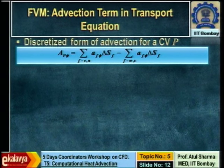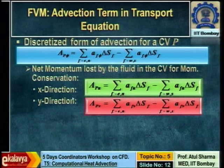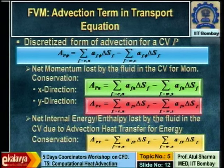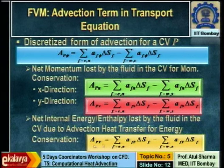When you do the advection balance, it represents net momentum lost by the fluid in the control volume for the momentum equation, and net internal energy lost by the fluid in the control volume due to advection for heat transfer. This is out minus in, which is why it is called a loss. Analogously, in conduction the sign convention was in minus out, so there it was heat gain.